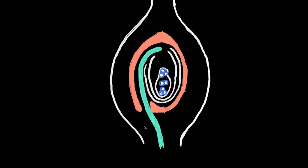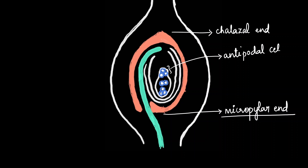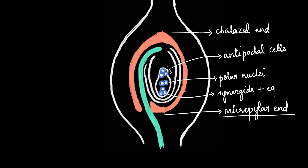Taking a closer look at the ovary: the ovary has two ends. One is called the chalazal end, and the opposite end is called the micropylar end. Inside, there are about eight cells. The group of cells on top are called antipodal cells. The two cells in the middle are polar nuclei. The two cells together are called synergids, and the single cell is the egg cell.